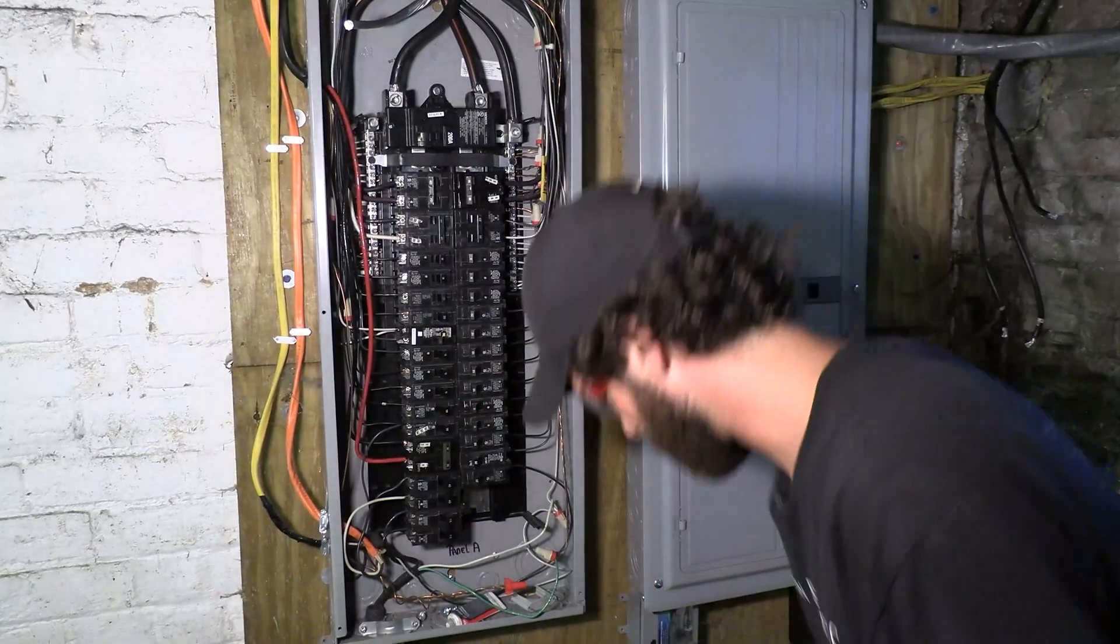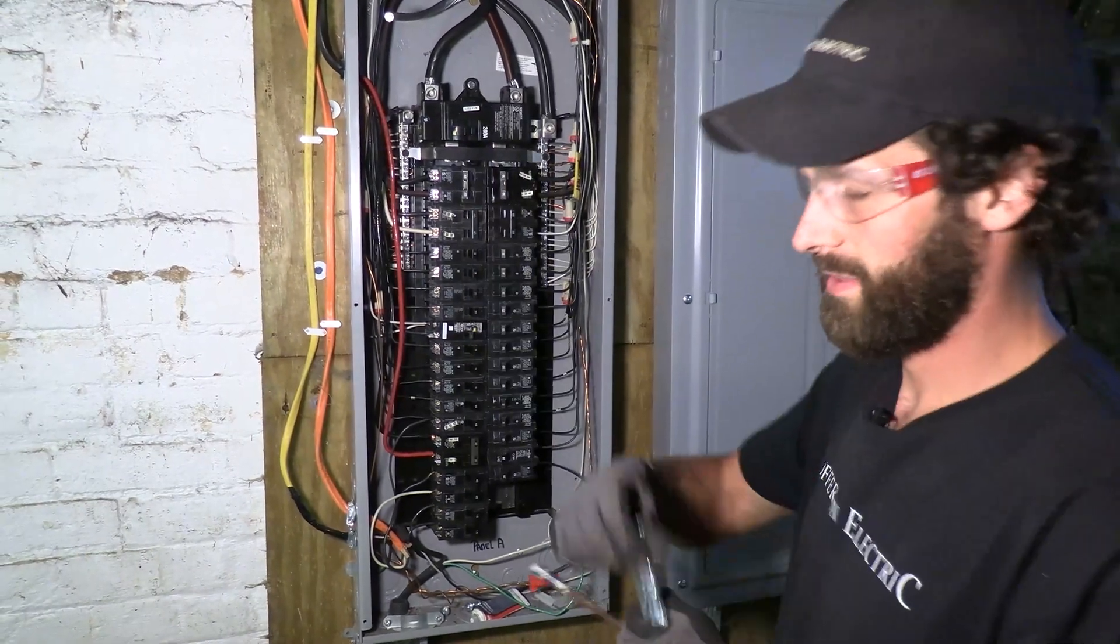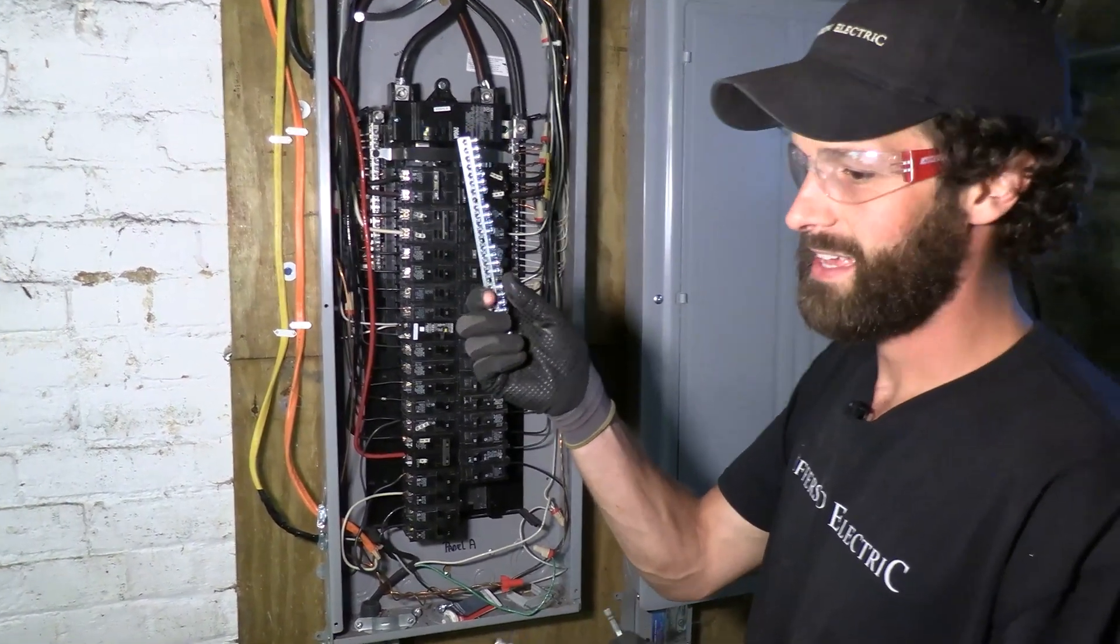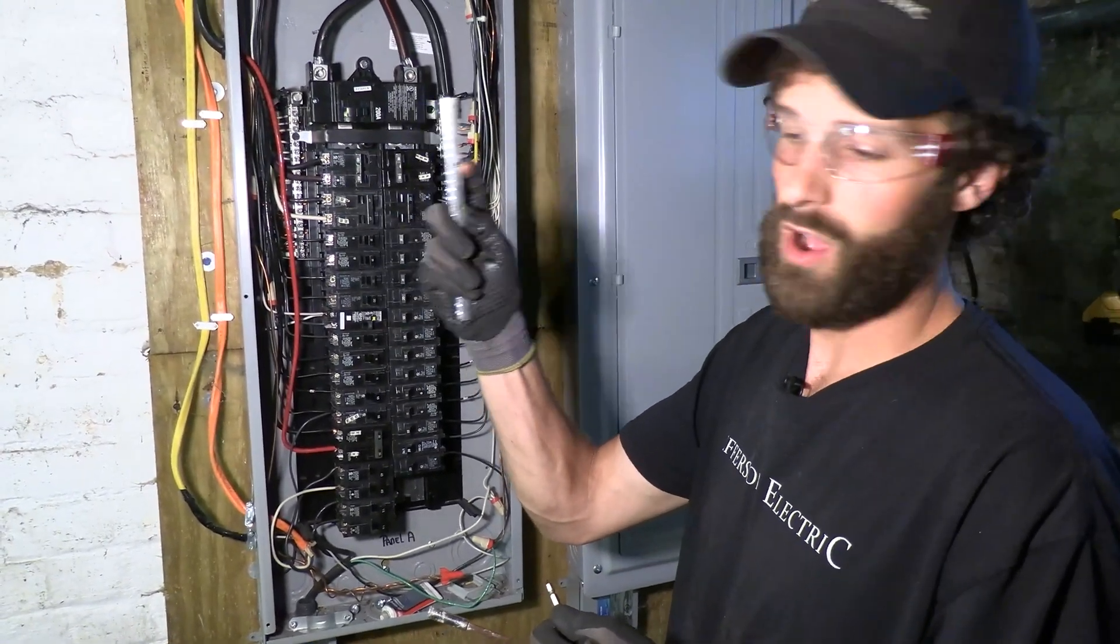If you buy a ground bar, it comes in packaging like this. Open up the packaging, extricate your ground bar, and the mounting screws that'll pop right through those holes are included.